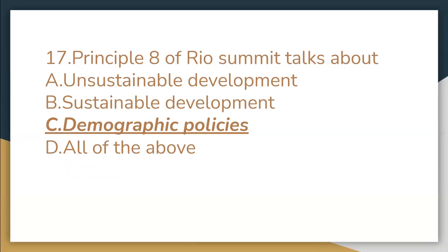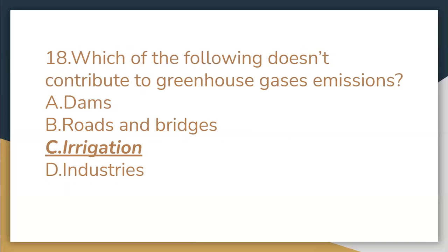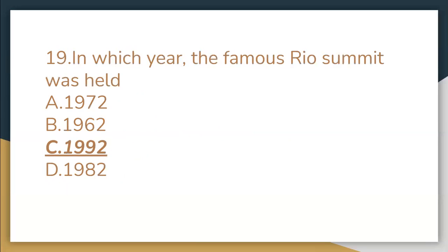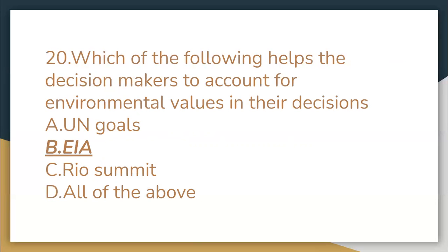Principle 8 of the Rio Summit talks about demographic policies. Which of the following doesn't contribute to greenhouse gas emissions? Irrigation. In which year was the famous Rio Summit held? 1992. Which of the following helps decision makers to account for environmental values in their decisions? EAA.